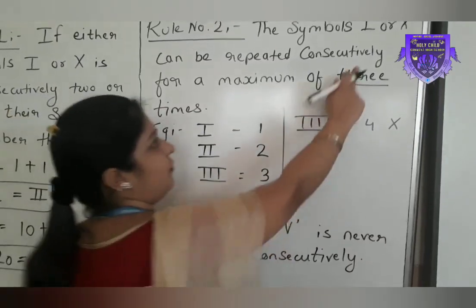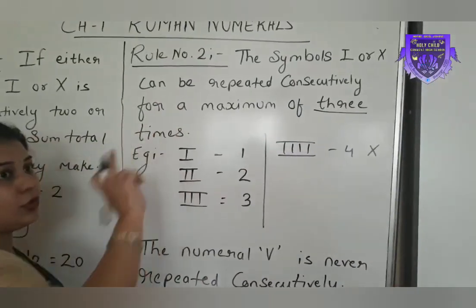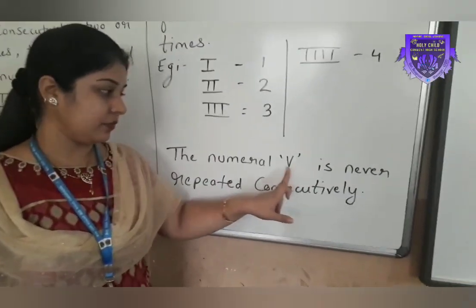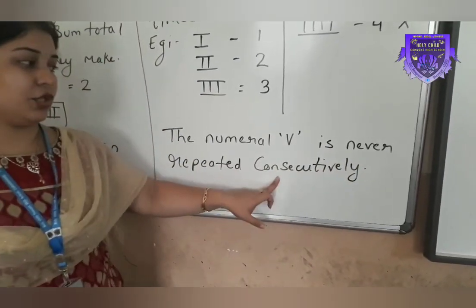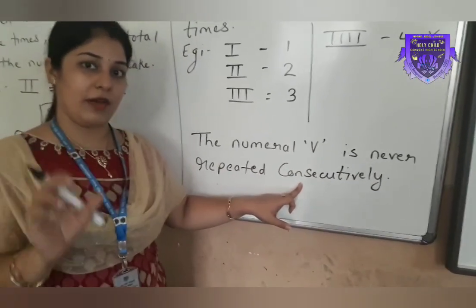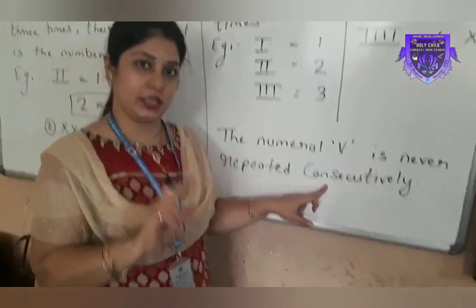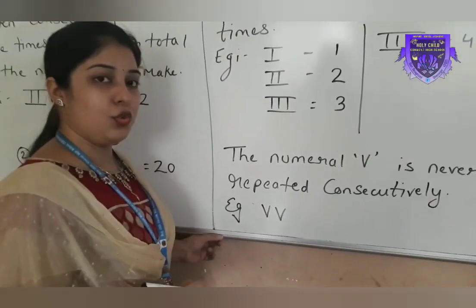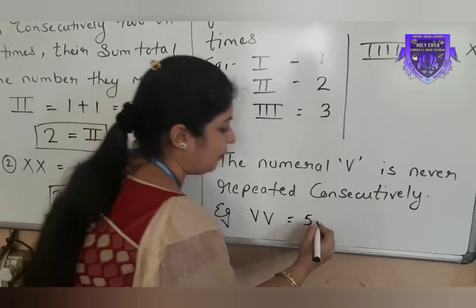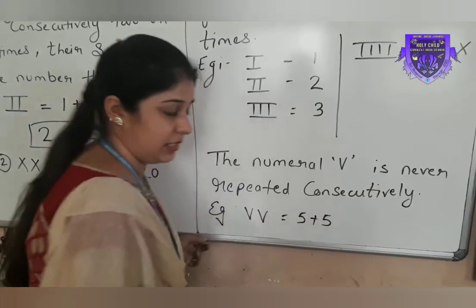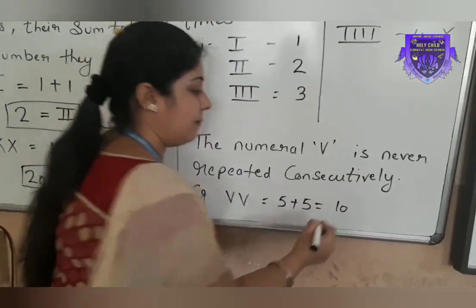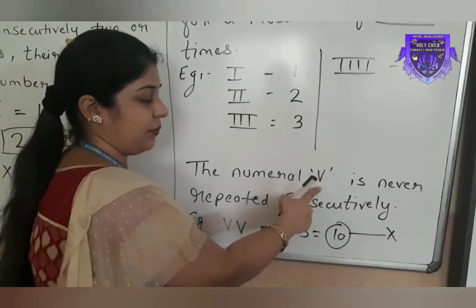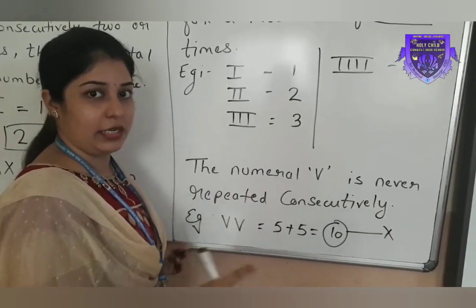In rule number 2, there is one special point: the numeral V, which is 5, is never repeated consecutively. Means we cannot repeat numeral V consecutively for two or three times — it is written only once. For example, suppose we write V two times. The value of V is 5, so we add 5 two times, giving us 10. But already we are representing the value 10 in Roman numerals as X. So we cannot repeat V two or three times. It is wrong — written only once.